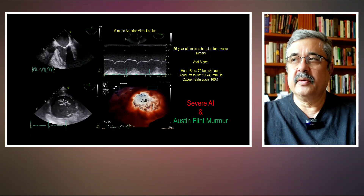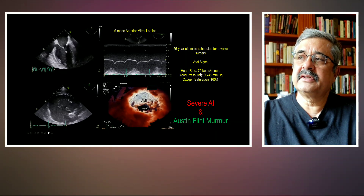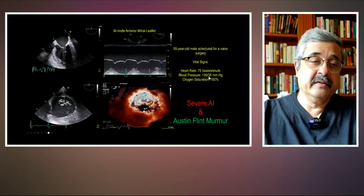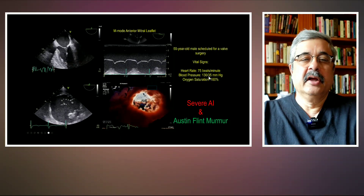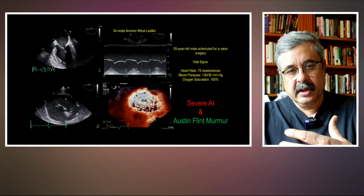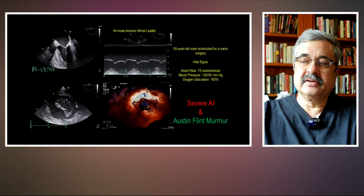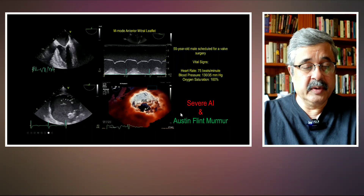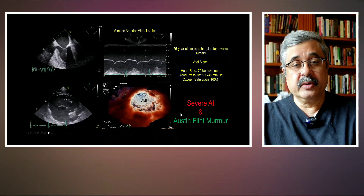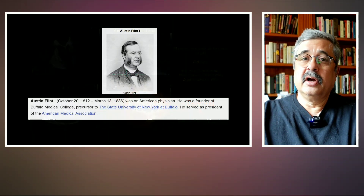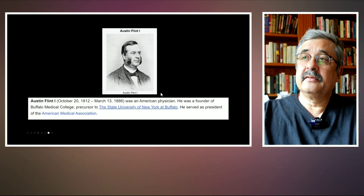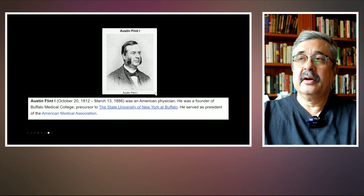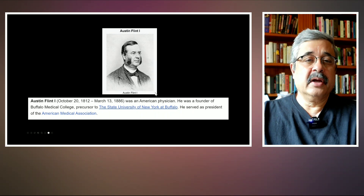This eccentric jet causes high-frequency fluttering and the diastolic aortic murmur. This is also obvious in the blood pressure reading of 130 over 35, which reflects a huge pulse pressure due to a rapid decline in diastolic pressure caused by severe aortic insufficiency. This is known as the Austin Flint murmur, attributed to Dr. Austin Flint.